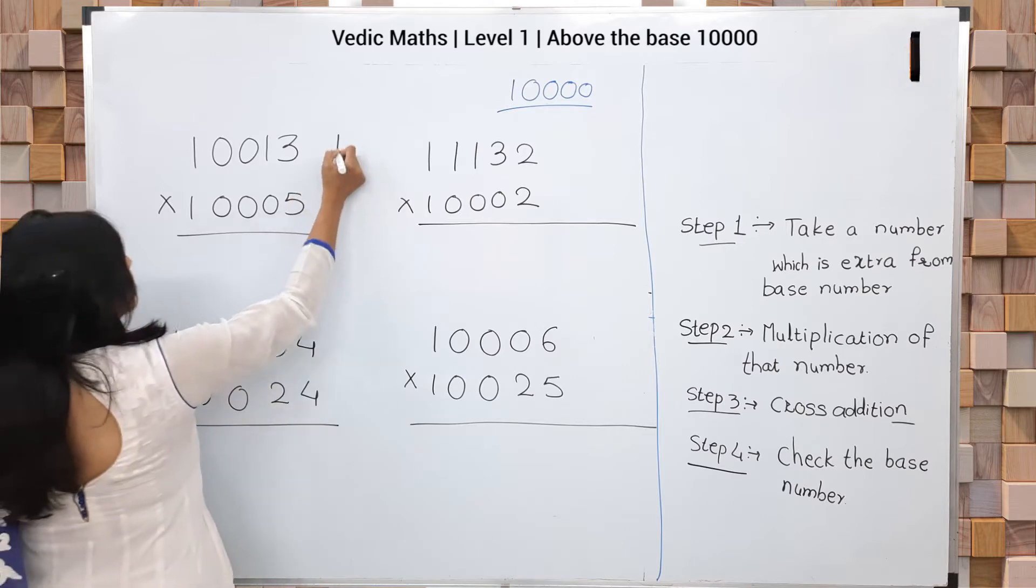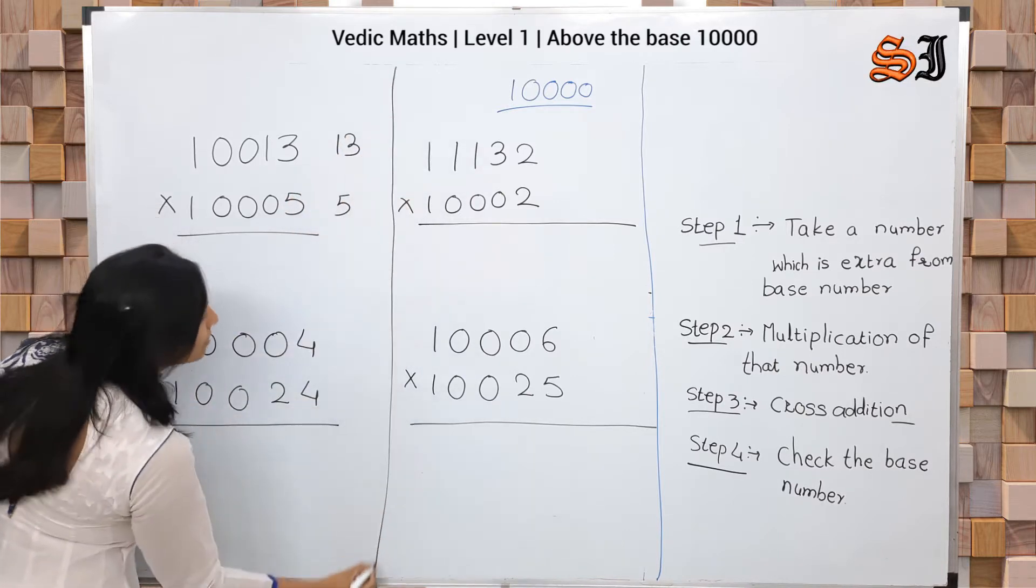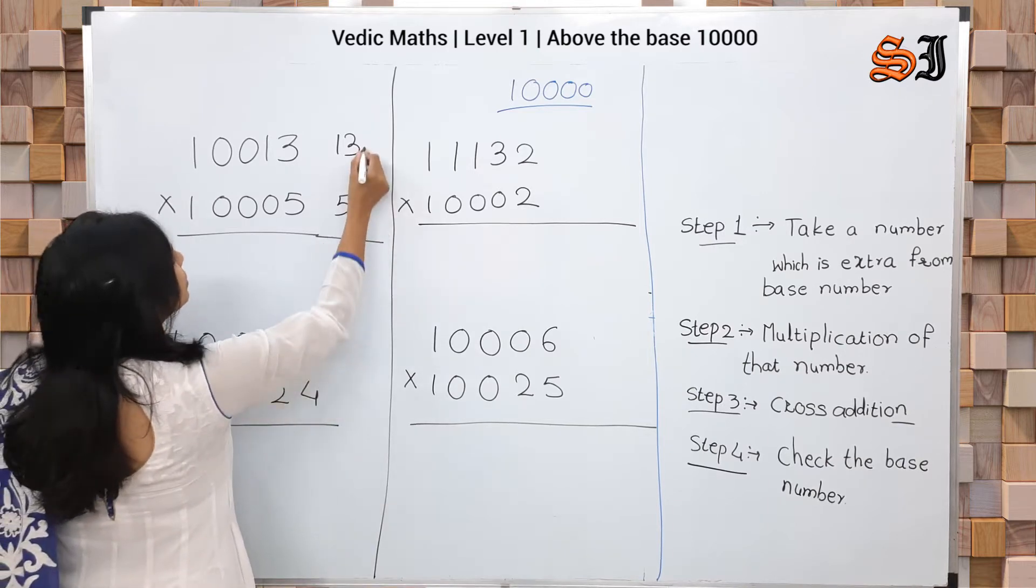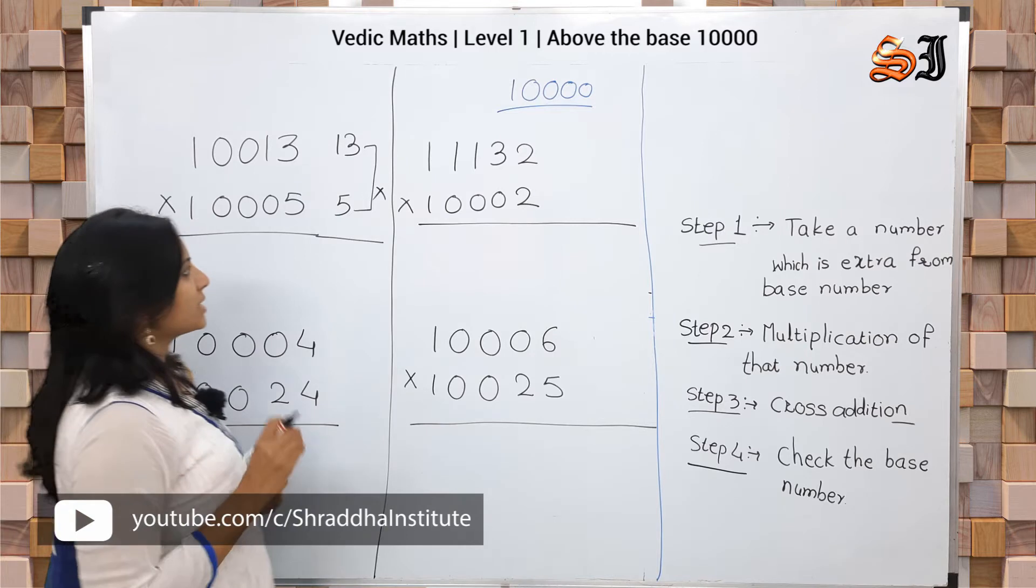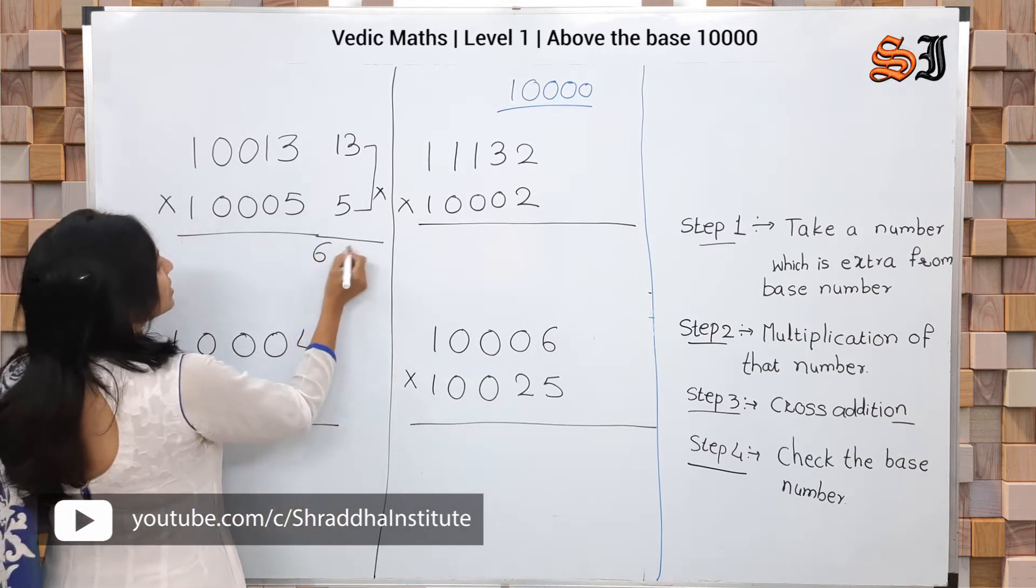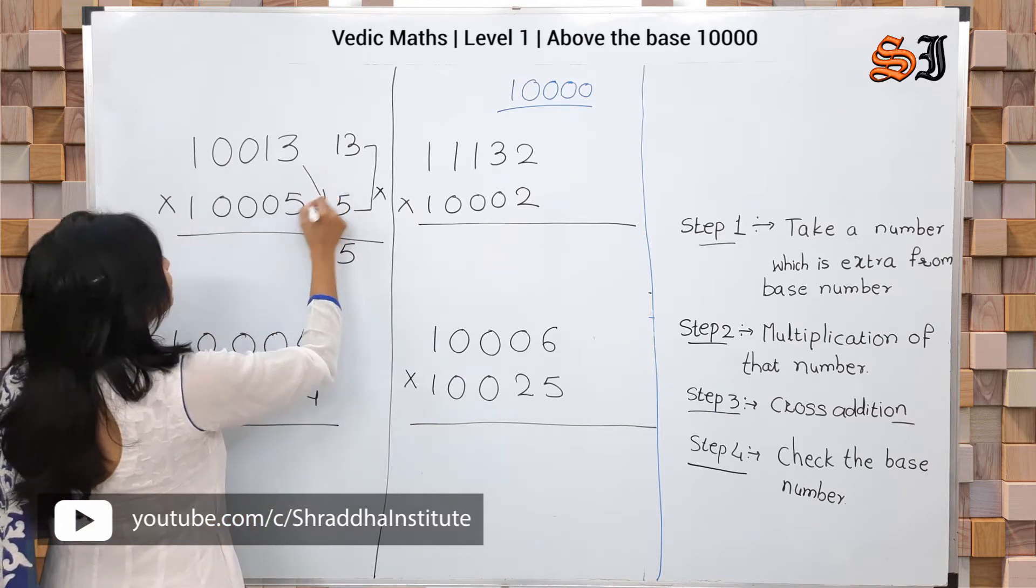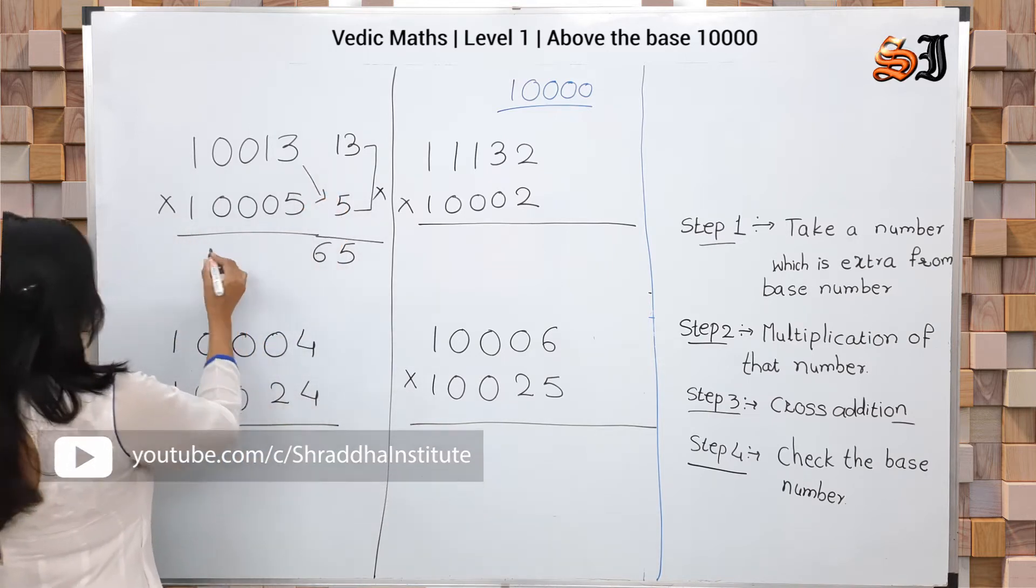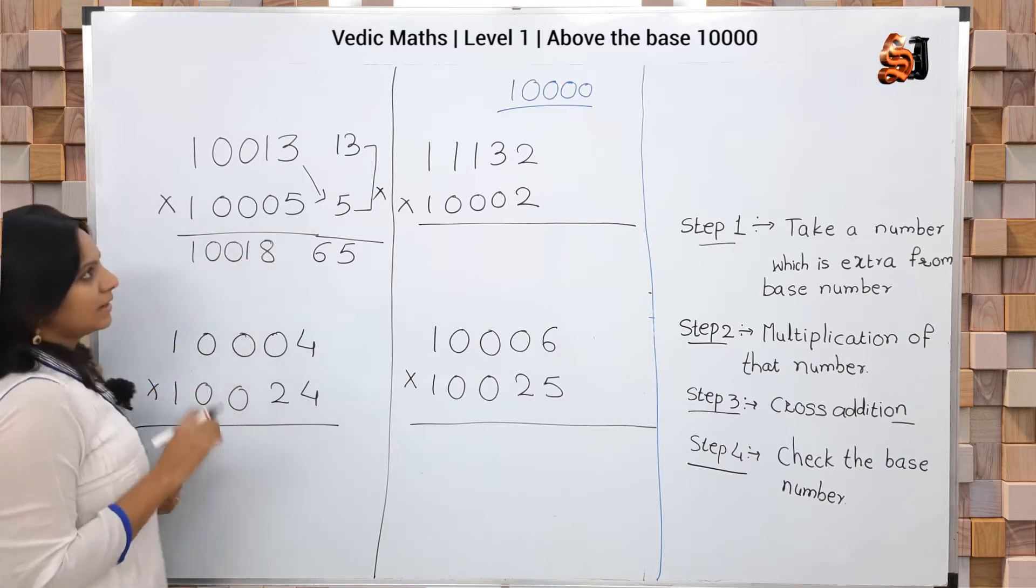Here is 10013, here is 10005. These are the numbers for multiplication. Cross addition. I'm going to write: 1, 0, 0, 1, 8.